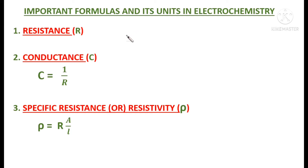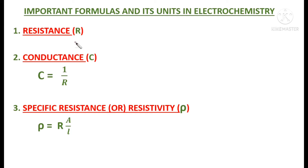We shall start from the basics. What do you mean by resistance? Every conducting material offers some obstruction to the flow of electricity, and that obstruction is called resistance. Resistance is represented by capital R and is measured in ohms. The symbol for ohms is Ω.